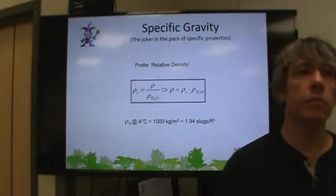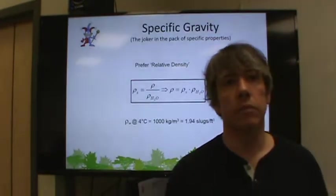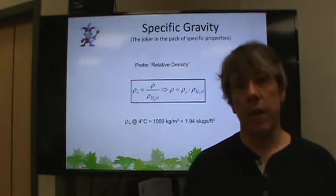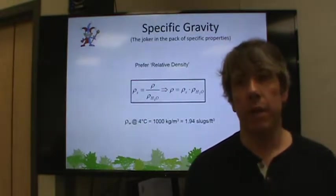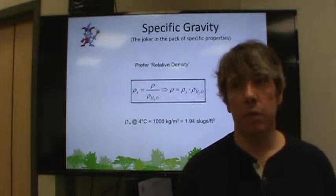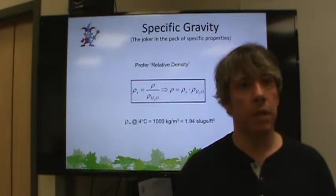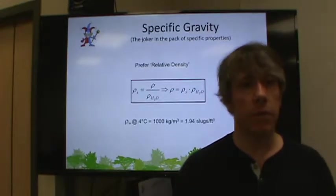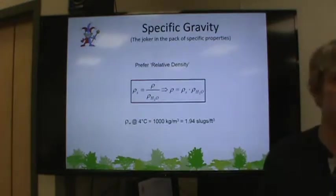We have to decide what density of water we want to use, and so the standard reference state is four degrees Celsius, where water has a density of a thousand kilograms per cubic meter, or 1.94 slugs per cubic foot. Any questions on that?